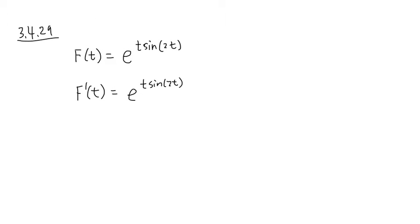We are going to multiply by the derivative of the index function, which is this part. Let me just put multiplication sign and open the parentheses. This part is t times sine of 2t. It needs the product rule.